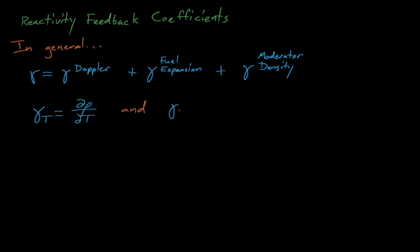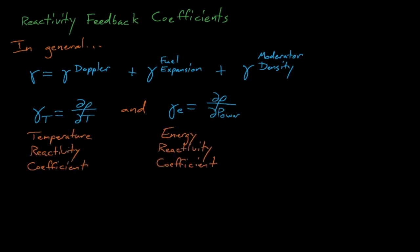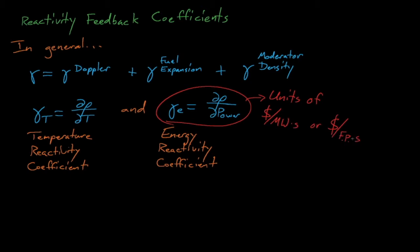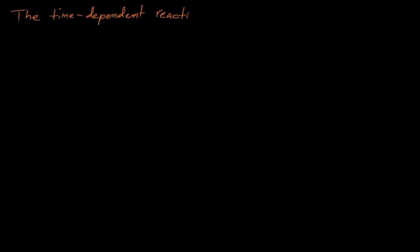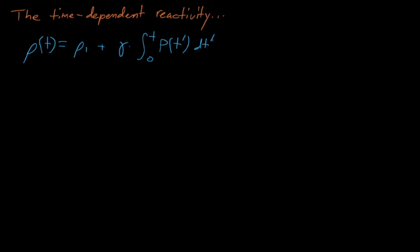Reactivity feedback coefficients describe how changes to some system parameter affect a system's eigenvalue or reactivity. Essentially, they're like sensitivity coefficients for the reactivity with respect to the system's temperature or power. These reactivity coefficients can have units of dollars per degree Fahrenheit or Celsius, or dollars per megawatt-second, or dollars per full-power-second, or whatever is convenient for describing our system. During the transient, we will assume that the reactivity equals its initial reactivity rho_1, plus gamma, the reactivity feedback coefficient, times the integral of the system's power since the start of the transient.